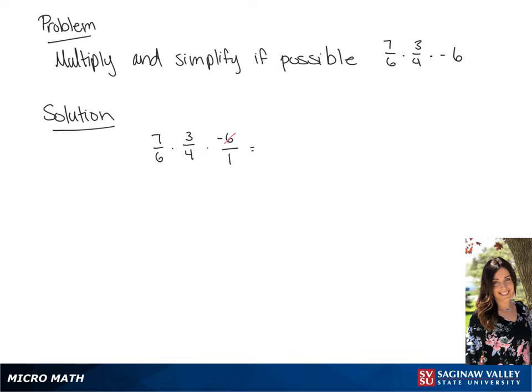6 goes into negative 6 once, so it will be 7 times 3 times 1 for the numerator, which we get as 21, and 1 times 4 times 1 for the denominator, which will be 4. So we have our final answer of negative 21 over 4.